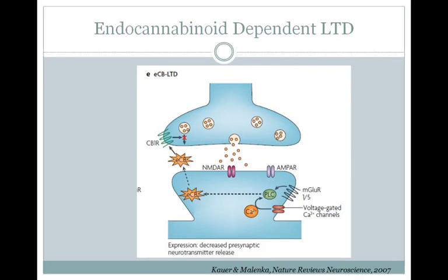Just as there are many ways to induce LTP, there are multiple ways to induce LTD. One that involves a presynaptic component is dependent on the release of endocannabinoids from the postsynaptic neuron. It's thought that calcium entry through voltage-gated calcium channels, or a pathway set up by the mGluR1 or 5 receptor, can lead to the start of a PLC-dependent signaling cascade, causing the release of endocannabinoids. These can then bind to cannabinoid receptors on the presynaptic neuron and act to reduce the amount of neurotransmitter released following each stimulation, resulting in a smaller EPSP on the postsynaptic membrane.